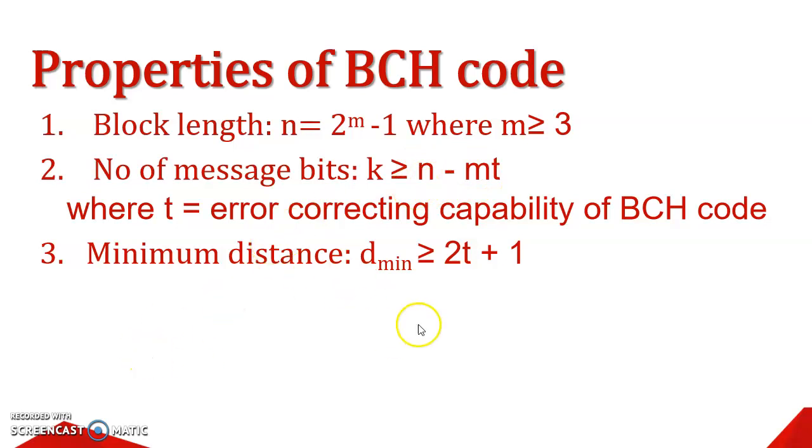Third one, minimum distance, that is d_min. The formula for minimum distance is 2t plus 1.